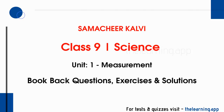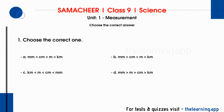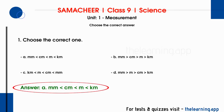In the measurement lesson, we will look at book-back questions and answers. First, choose the correct answer. Question 1: choose the correct one. There are 4 options. The correct option is A: millimeter is lesser than centimeter, which is lesser than meter, which is lesser than kilometer.